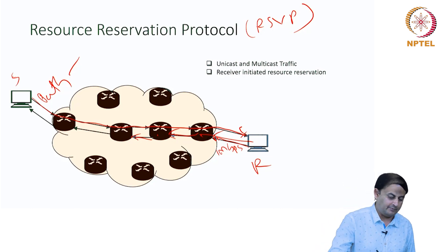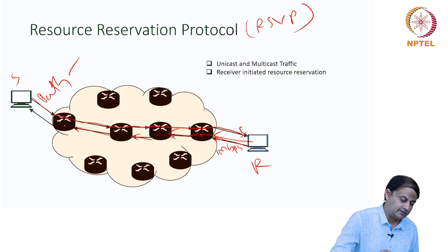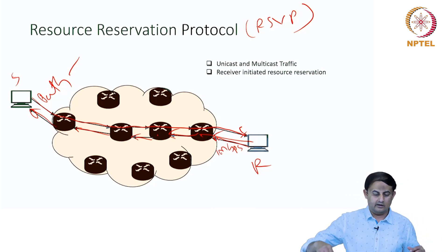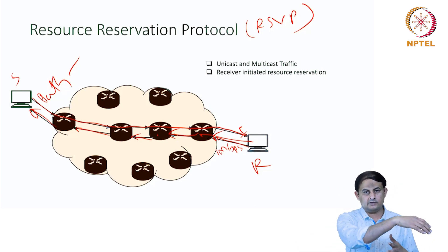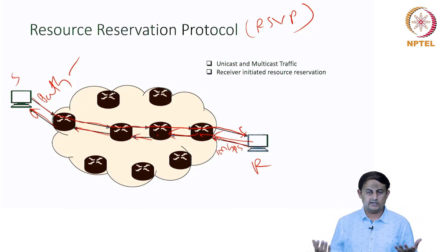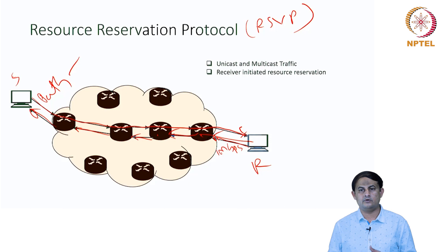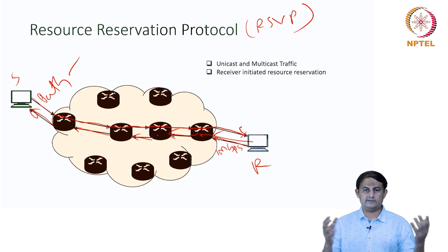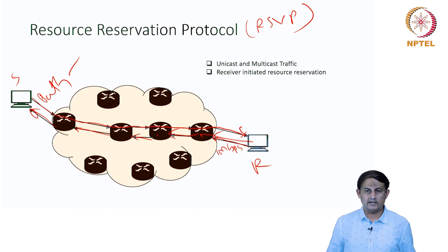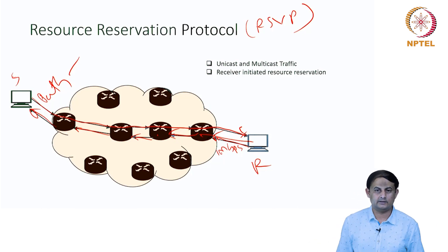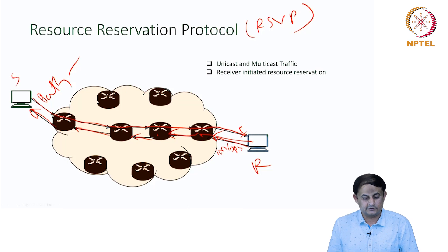The resource reservation setup is complete only when all resources along the path from receiver to sender have been reserved. A confirmation message is then sent back to the receiver indicating that reservation is now complete and the application can start utilizing the transmission.